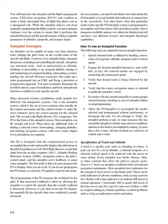Specification of track and altitude: a track is a specific goal such as a heading or course. A goal can also be a level altitude, a selected airspeed, or a selected vertical speed to be achieved with the power at some setting. Every autopilot uses knobs, buttons, dials, or other controls that allow the pilot to specify goals. Figure 4-1 shows an autopilot combined with conventional navigation instruments.